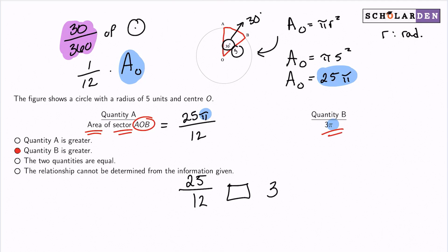So which one's bigger? Well, you can grab your calculator, and 25 divided by 12 is about 2.08, and 3 is still 3. So 3 is bigger, and because 3 is bigger, quantity B is bigger. And that's why it's the answer.